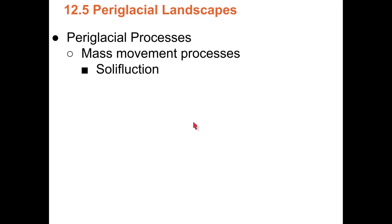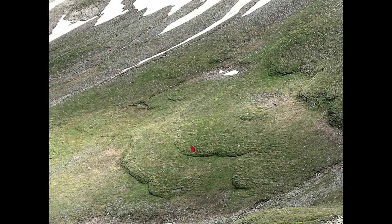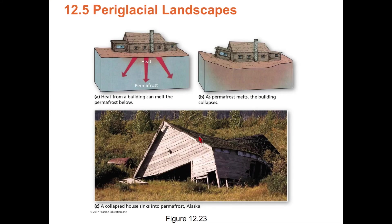Mass movement in periglacial environments includes solifluction — like soil creep where soil gets soupy and gradually oozes downslope in big lobes over years under gravity. You should never build a house directly on permafrost because you'll melt it and the house will collapse into a pit of mud. Buildings in permafrost regions must be put up on pilings or stilts to keep them off the ground.